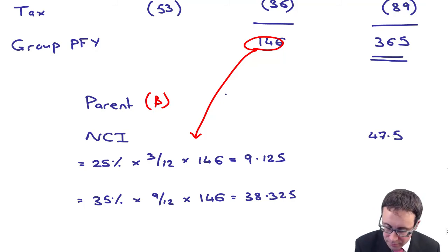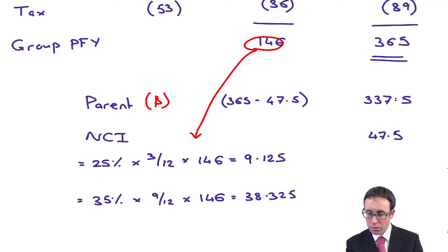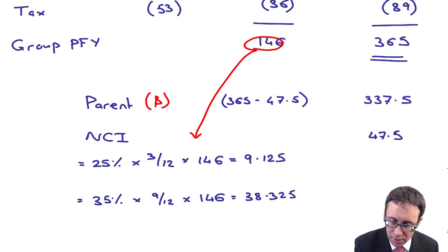The balancing figure is obviously just the 365 less the 47.5, which is 317.5. There we go. Excellent. Hopefully that all adds up, tallies up, and works out.